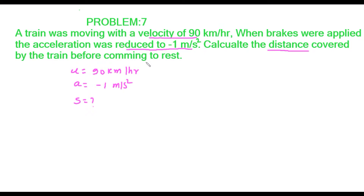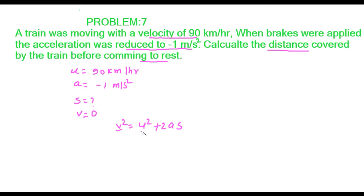The train is moving at 90 when brakes are applied with acceleration minus 1 meter per square second. At a certain time it comes to rest, so the final velocity becomes zero. We know the equation: v² = u² + 2as. Using this formula we can get the value of s, because we have v, u, and a.